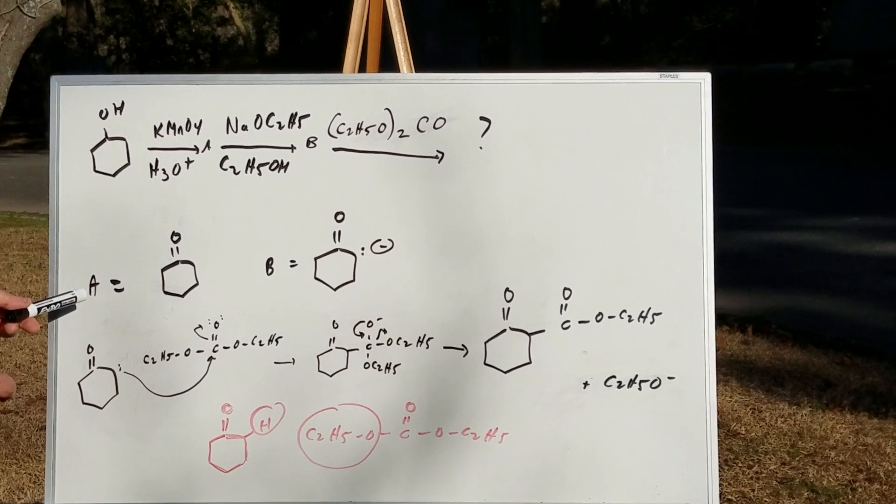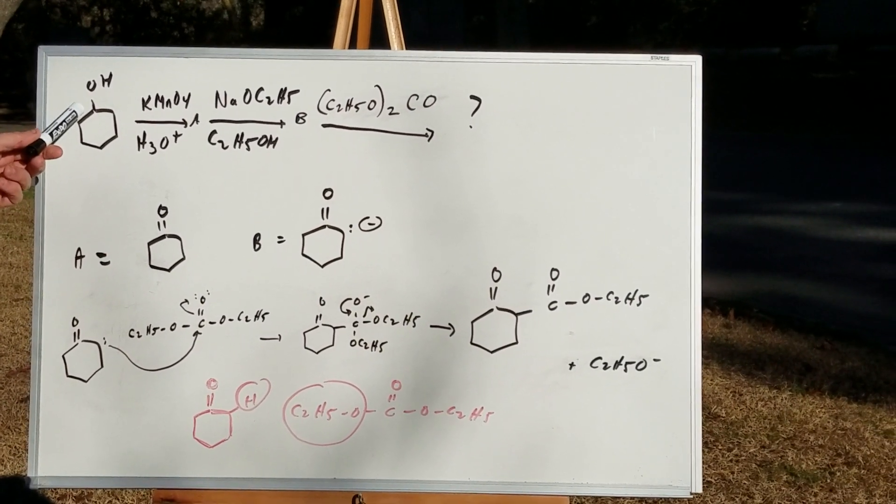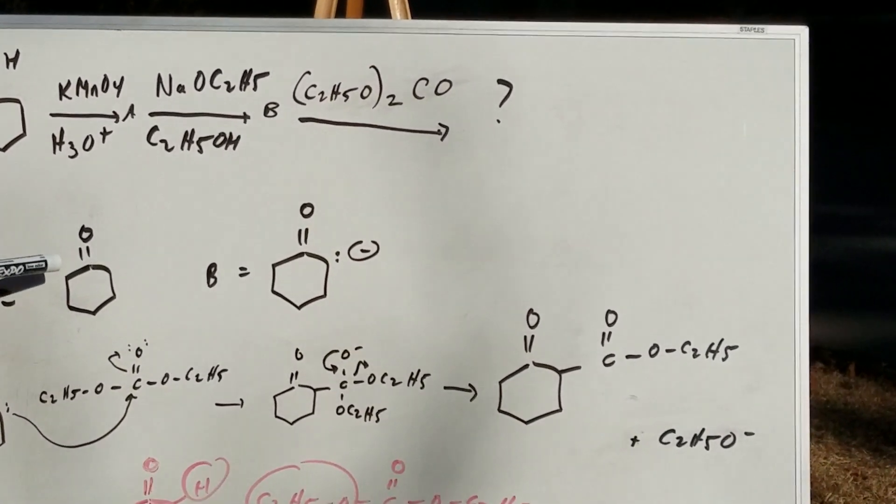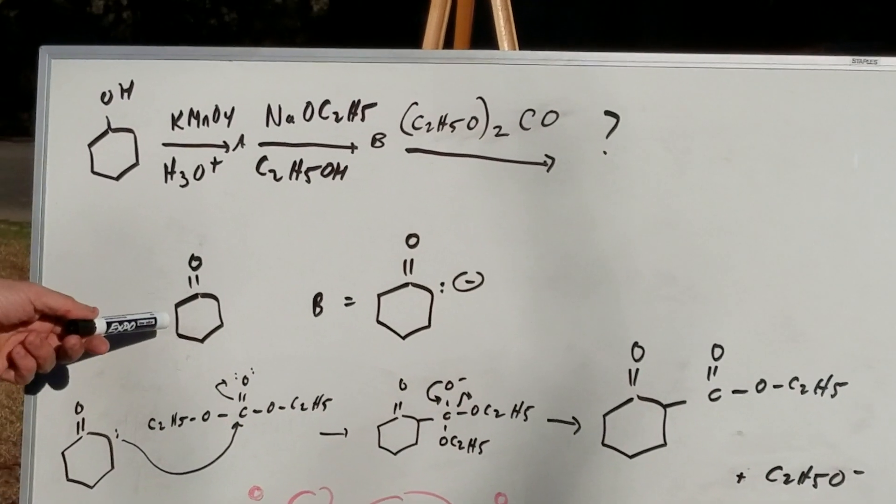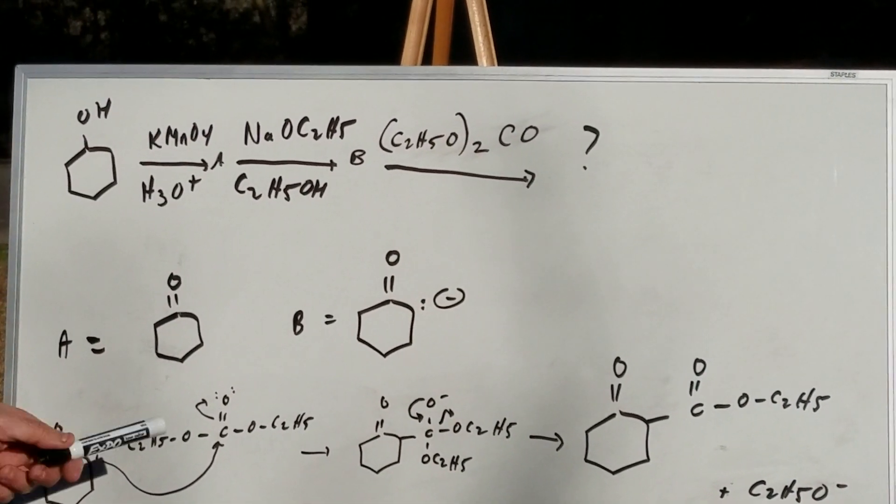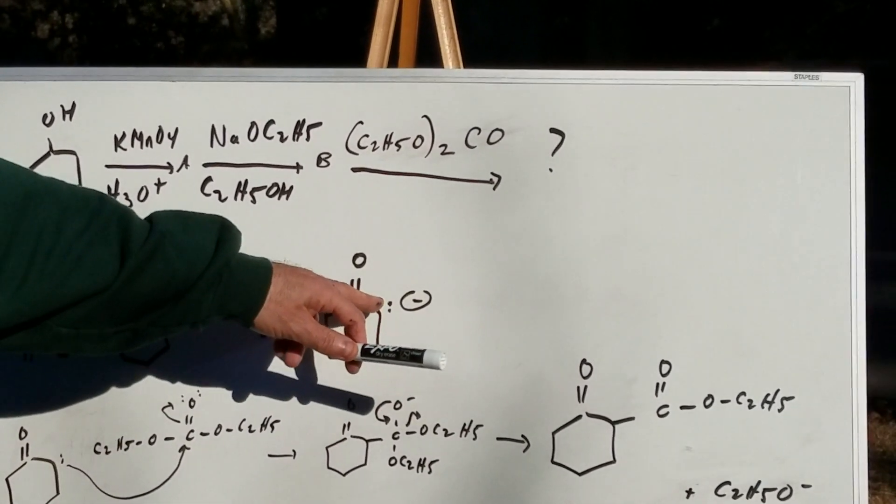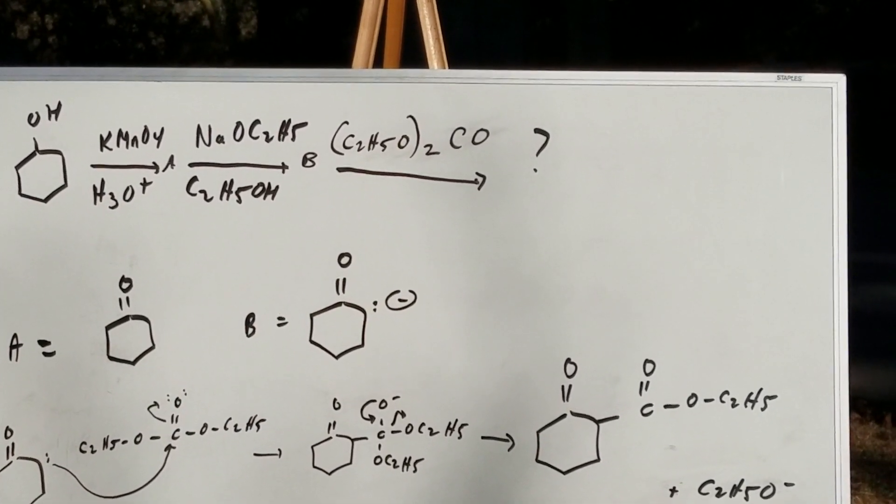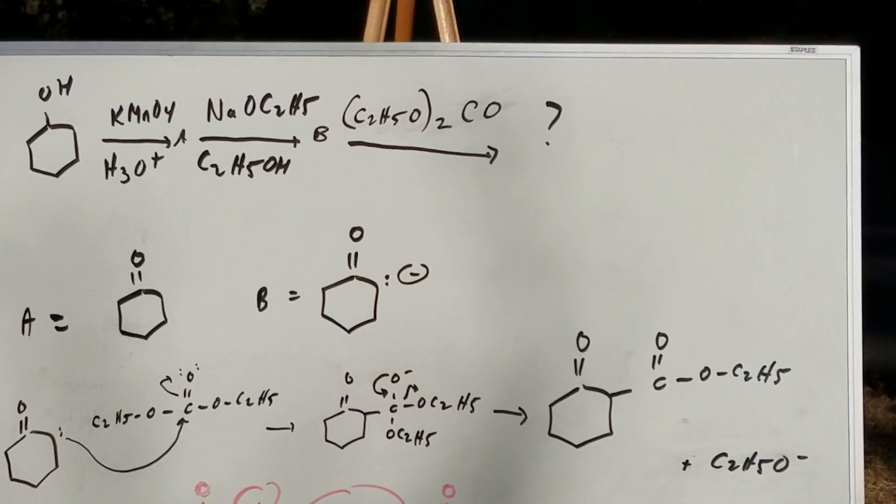As you can see, for the first step, that's an easy one. All I do is take the cyclohexanol and oxidize it to cyclohexanone. That's easy. And NaOEt, which is sodium methoxide, simply removes off the acidic alpha proton to generate the nucleophile.